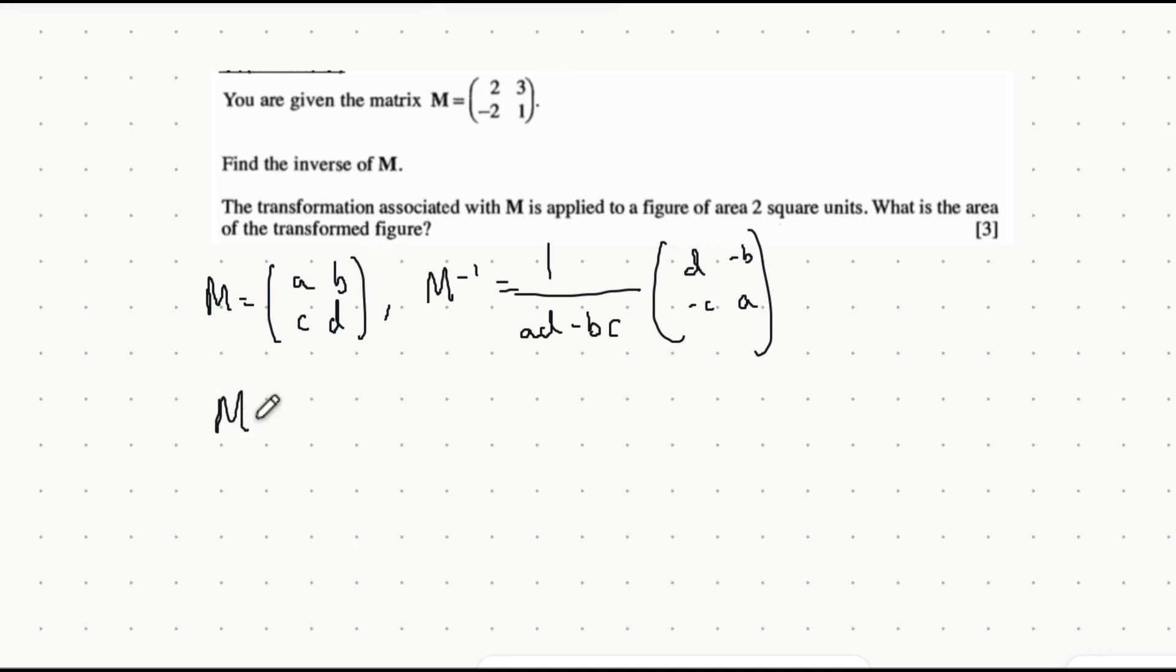So to start with we're going to write out the matrix that we have which is 2, 3, minus 2 and 1. I've written out this in a pretty important format here and using this format we can say that the inverse of this matrix after replacing A with 2, B with 3,